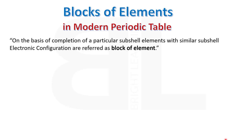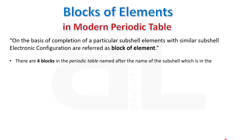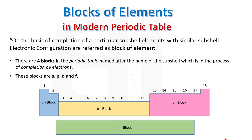On the basis of completion of a particular subshell, elements with similar subshell electronic configuration are referred to as a block of elements. There are 4 blocks in the periodic table, named after the subshell which is in the process of completion by electrons. These blocks are S, P, D, and F.